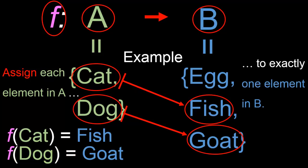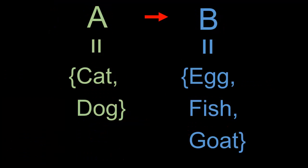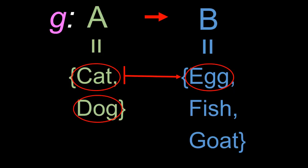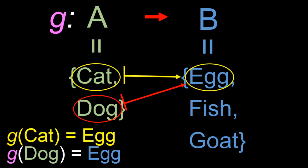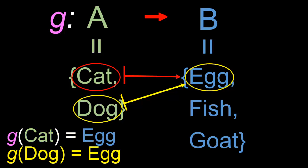What we've just written down simply says that f assigns cat in A to fish in B, and f assigns dog in A to goat in B. Let's try another example of a function, but we'll stick with the same sets A and B. Let's call this new function g. The function g maps cat to egg and maps dog to egg also. We can write this down as g(cat) is egg and g(dog) is egg.